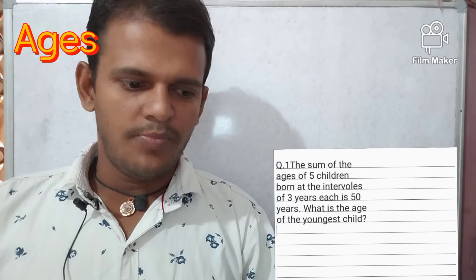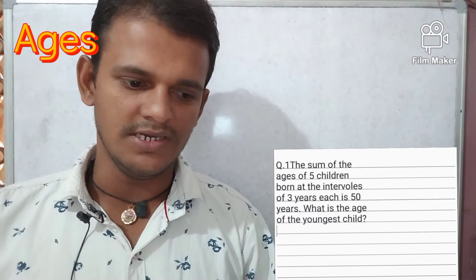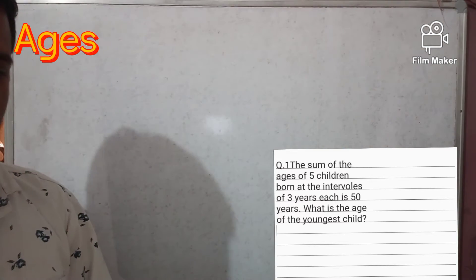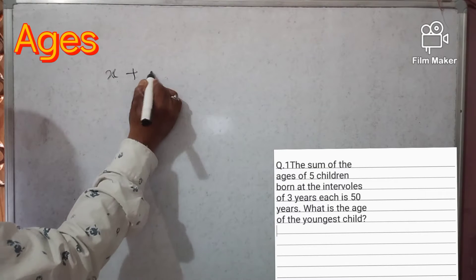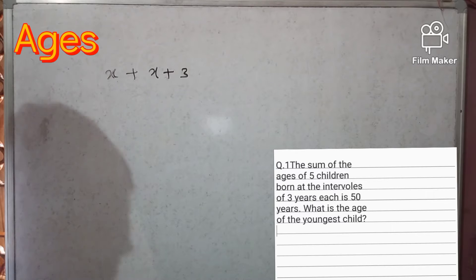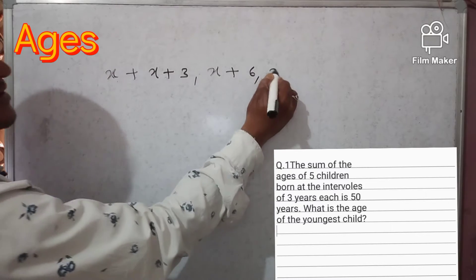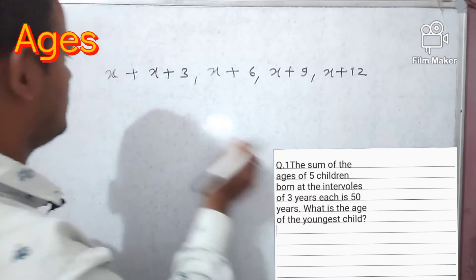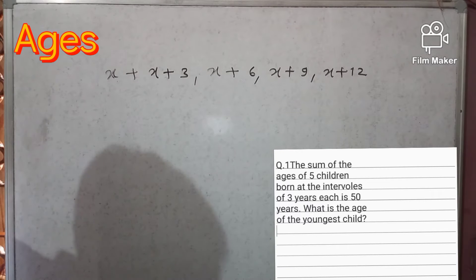The sum of the ages of five children born at intervals of three years each is 50 years. What is the age of the youngest child? Five children born at intervals of three years — suppose the first child is born at age x, the next will be x plus 3, then x plus 6, x plus 9, and x plus 12.